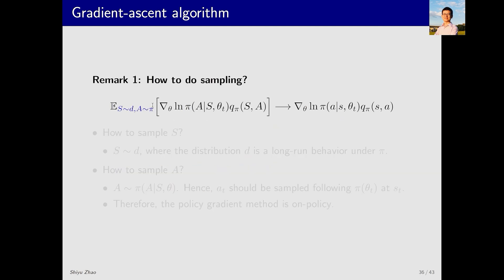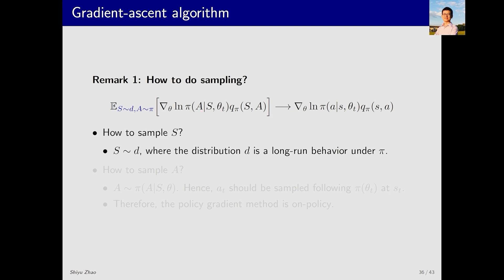We've completed the introduction to the policy gradient algorithm — the basic idea is quite simple. Now let's clarify three important points. The first point is about how to perform sampling. We need to use a stochastic gradient to replace the true gradient; the random variables involved are s and a. So how do we sample (s, a)?